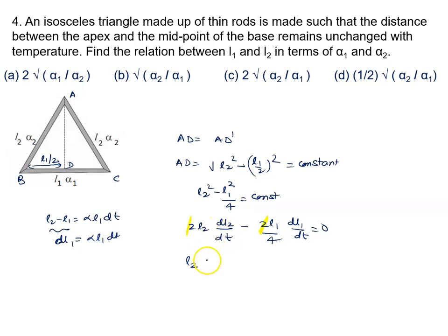So we put the value of dL2. dL2 is alpha 2 L2 dt upon dt, minus 1 by 4 L1, where dL1 is alpha 1 L1 dt upon dt.